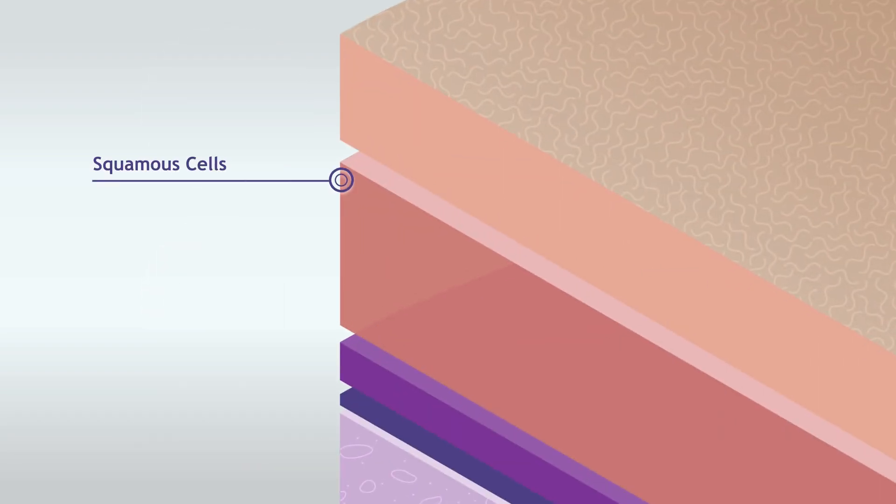The epidermis is made up of three types of cells: squamous cells, which form the top layer of the epidermis; basal cells under the squamous cells; and melanocytes, which produce melanin in the lowest layer of the epidermis.